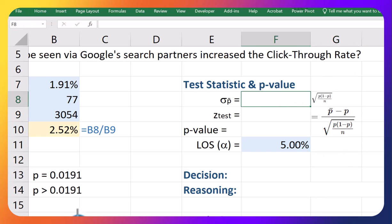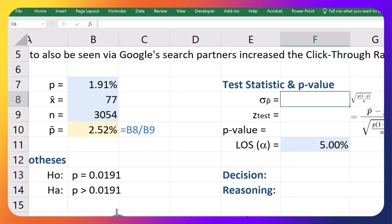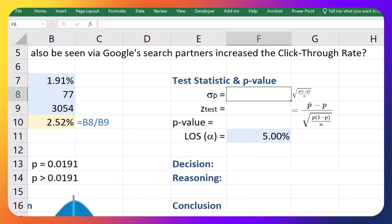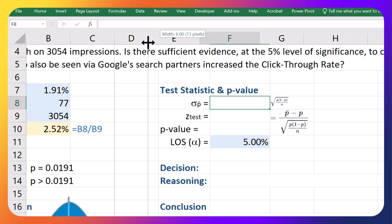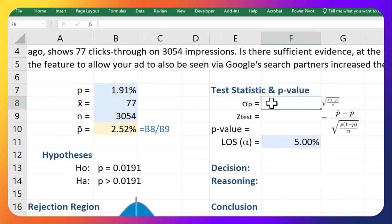So first of all, I'm just going to zoom out a little bit here. There we go that's better. Okay so first of all I need to get the square root of p times bracket one minus p which is in B7 and divide that by n which is my 3054, close bracket, and that is that standard deviation perfect.